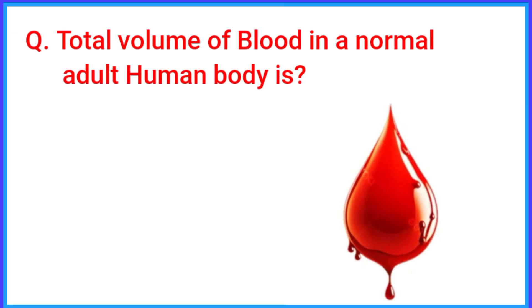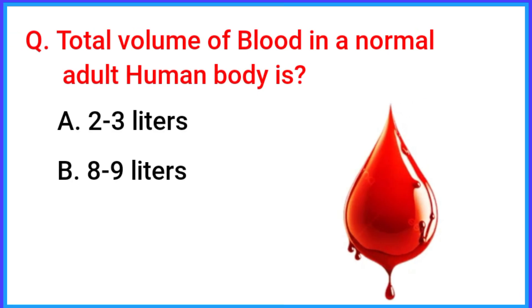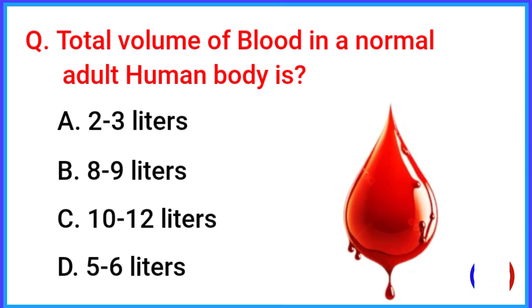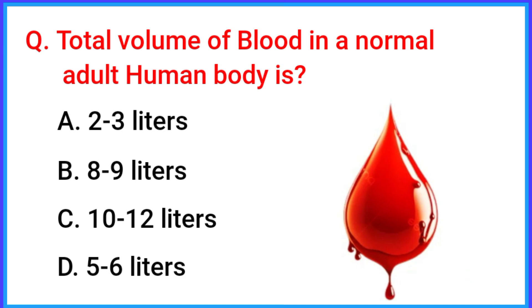Total volume of blood in a normal adult human body is? The correct answer is option D: 5 to 6 liters.